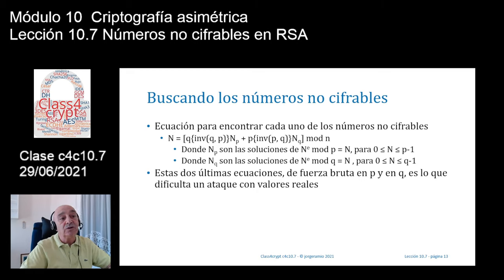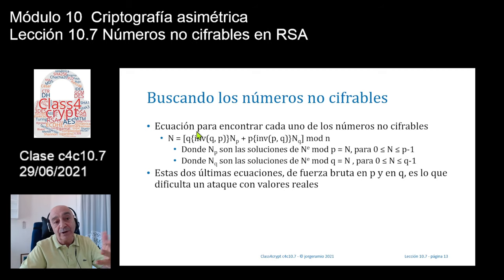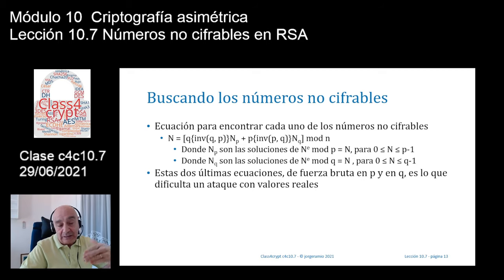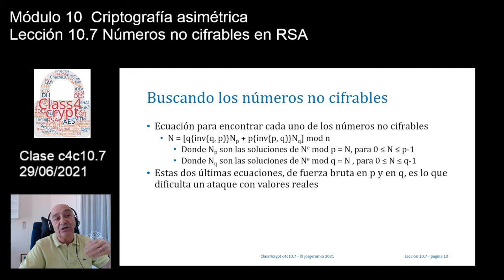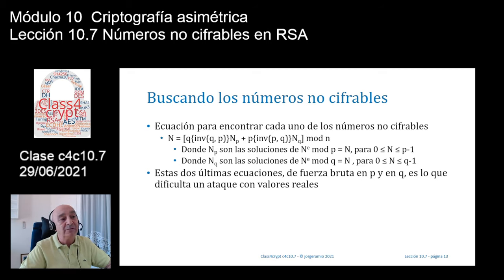Esta ecuación la podré utilizar con papel y lápiz o con el software GenRSA para números pequeños de 10, 20, 30, 40 bits sin ningún problema. Puedo tardar un poco más para 40 o 50 bits, unos cuantos minutos, pero lo puedo encontrar. Pero si quiero ir a claves mayores de 200, 500, 1000 o 2000 bits, es totalmente imposible encontrar estos números.